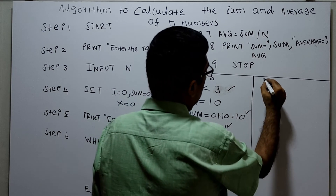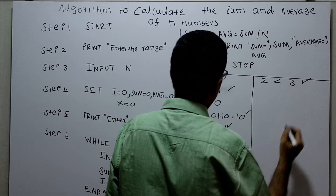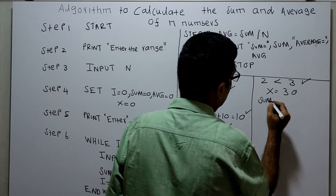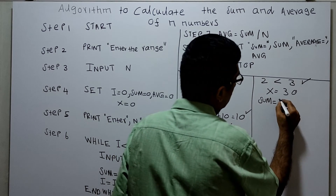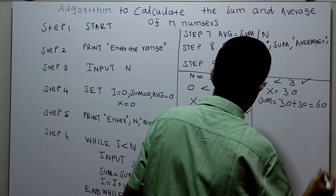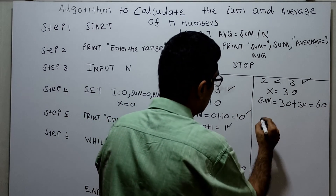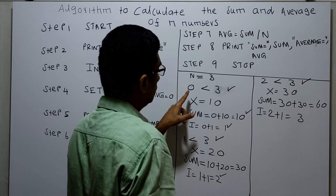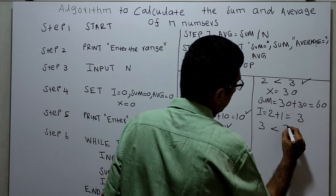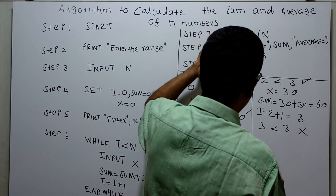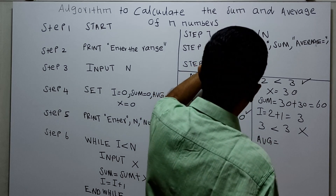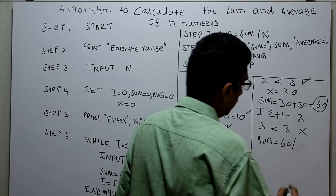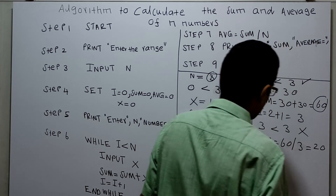Now check: 2 less than 3 is true. Input x — I give 30. Sum equal to existing sum (30) plus 30 equals 60. Then i equal to 2 plus 1, so i equal to 3. Now check: 3 less than 3 is false, so we come out of the loop. Average is calculated: avg equal to sum divided by n, which is 60 divided by 3, equal to 20.